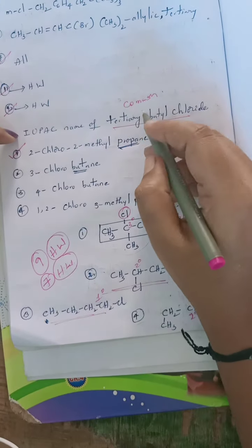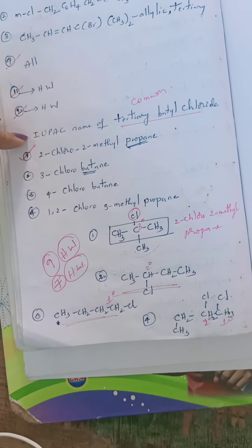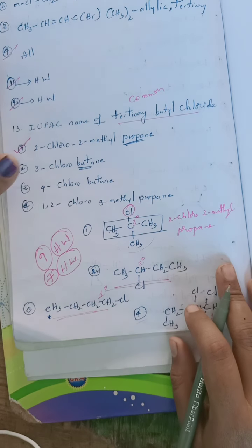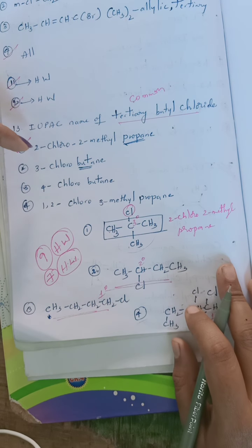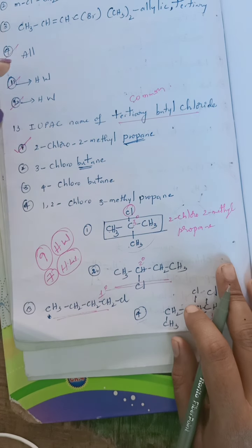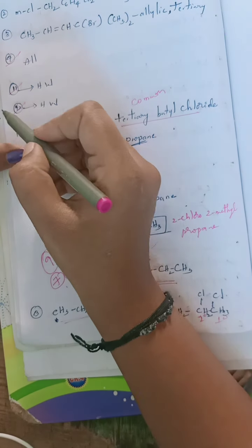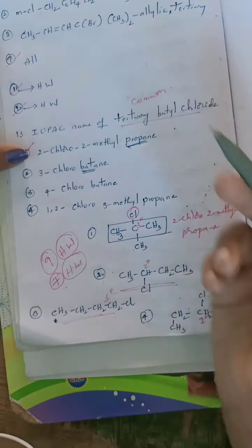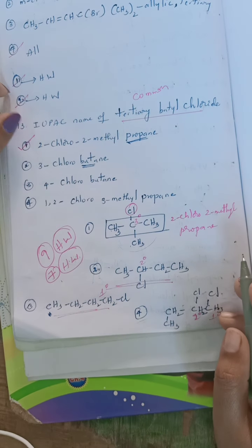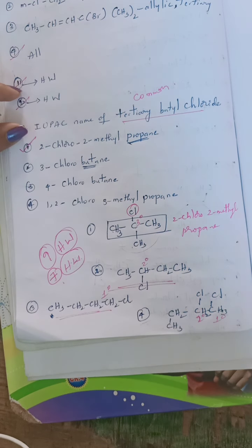So that means if a common name is given, we can write its structure and find its IUPAC name. This is about the questions related to IUPAC names and classification. The ninth, seventh, eleventh, and twelfth questions are homework for you — try to solve them as they are similar to the other questions.